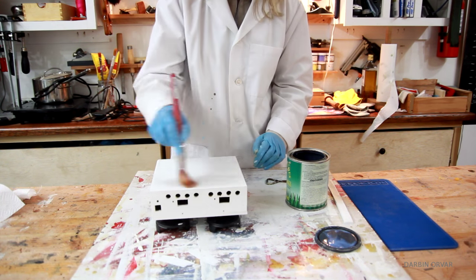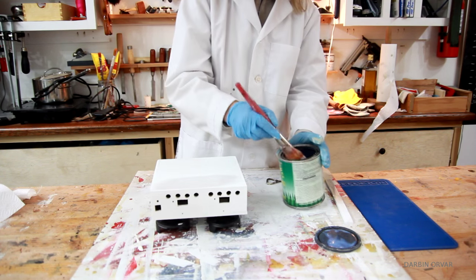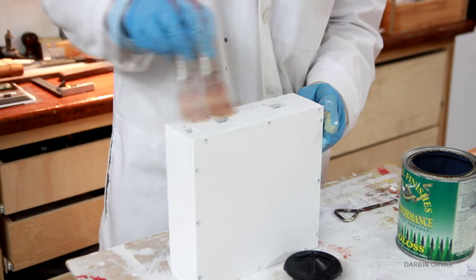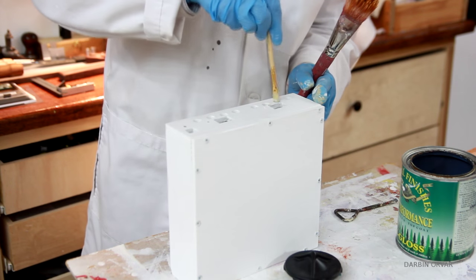Then once the paint dried, I put on two coats of water-based polyurethane, which I really like, because it doesn't add a yellow tone, and you know, it dries quickly. And of course it also adds some additional protection.